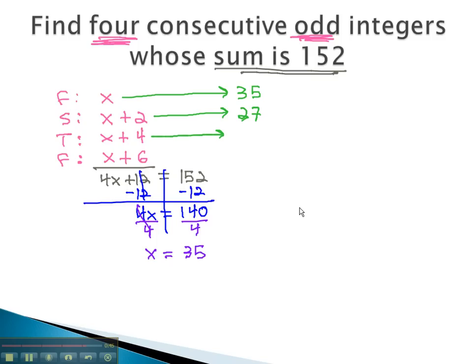To find the third number, we add 4 to x. 35 plus 4 is 39. To find the fourth number, we add 6. 35 plus 6 is 41.